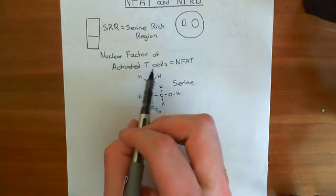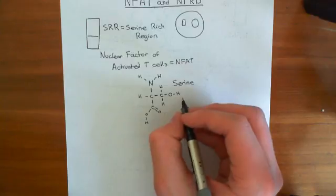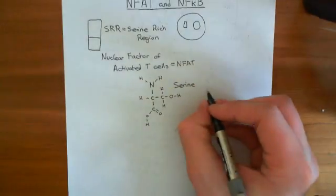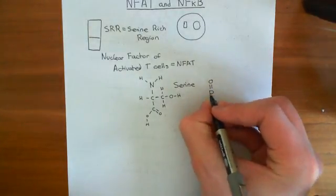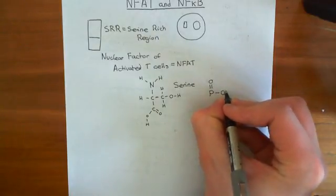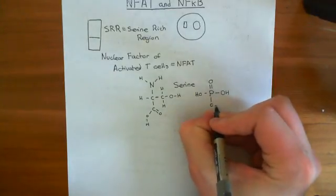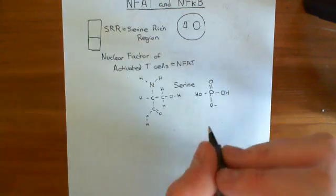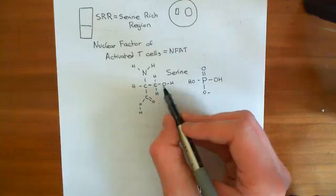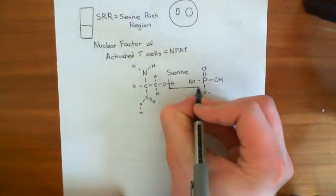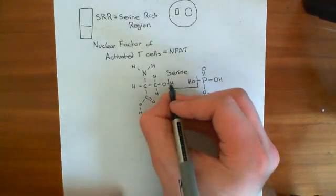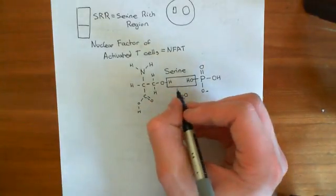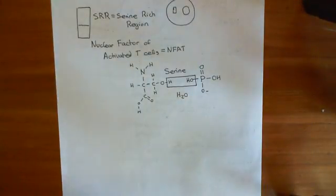When the nuclear factor of activated T cells is in the inactive state, these serine residues are phosphorylated, which means that instead of having a hydrogen coming off this oxygen, you have a phosphate group coming off here. A phosphate group has a phosphorus atom at the centre with a double bond to an oxygen, two hydroxyl groups, and a single bond to an oxygen with a negative charge. To phosphorylate the serine residue, you perform a condensation reaction, removing the hydroxyl from phosphorus and the hydrogen from serine's hydroxyl, releasing water and forming a link between the phosphate group and the serine.